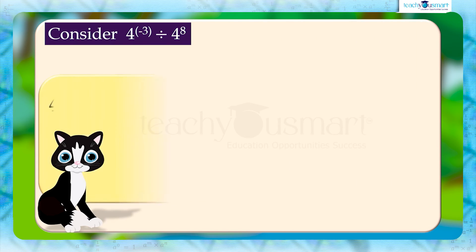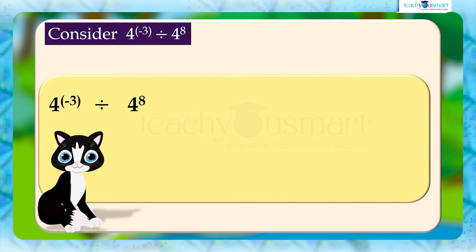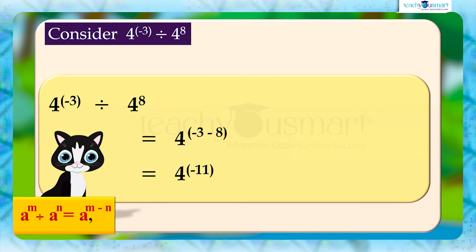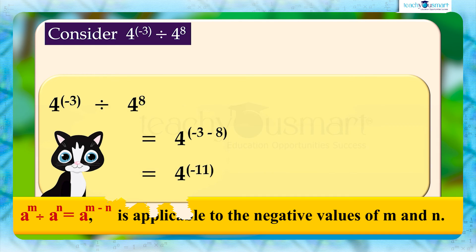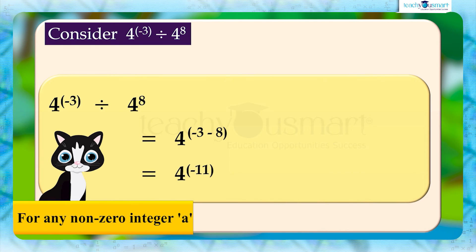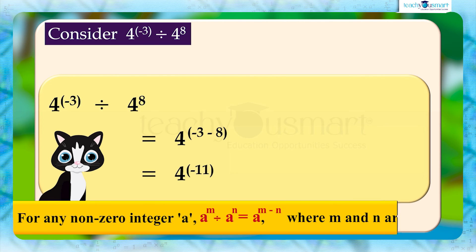By observing the exponents we get minus 3 minus 8 equals minus 11. That is, a raised to m divided by a raised to n equals a raised to m minus n is applicable to negative values of m and n. So we can say that for any non-zero integer a, a raised to m divided by a raised to n equals a raised to m minus n, where m and n are integers.